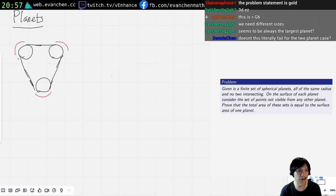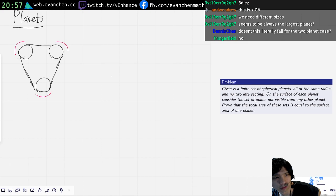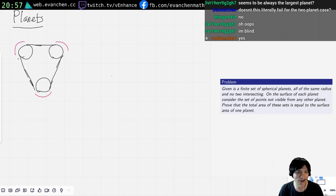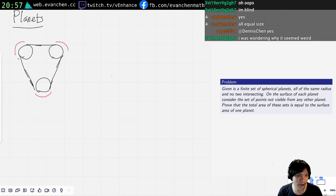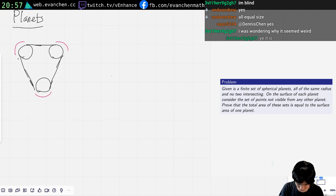So for N equals 3, it's literally the in the 2D N equals 3 case, it's the assertion, I think, that seems to be the largest planet. No, the planets are all literally the same size. Doesn't this literally fail for the 2 planet case? No, no, no, the planets are all equal size, right? Wait, I'm confused about comments about largest planet. I think the prompt says equal size. Okay, cool. So for N equals 3, I think it's literally the assertion that the sum of angles in triangle is 180.